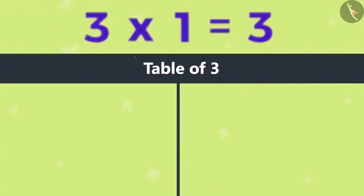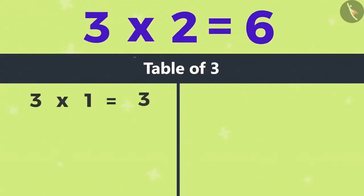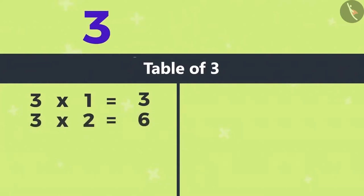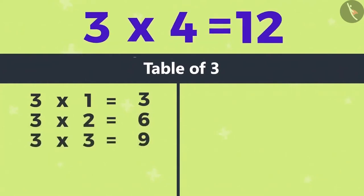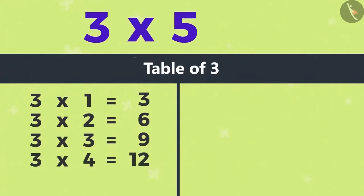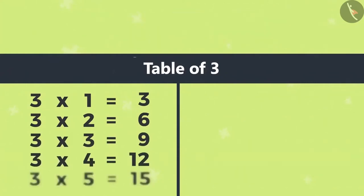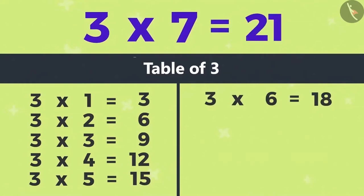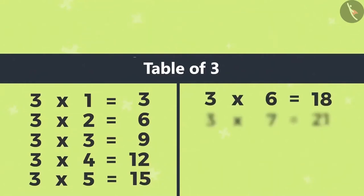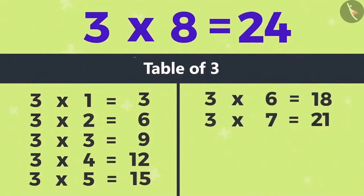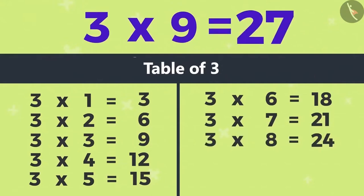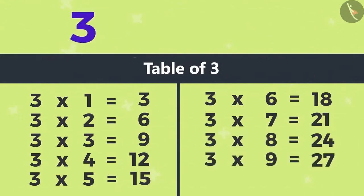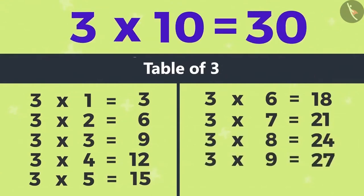Like this: 3×1 is 3, 3×2 is 6, 3×3 is 9, 3×4 is 12, 3×5 is 15, 3×6 is 18, 3×7 is 21, 3×8 is 24, 3×9 is 27, 3×10 is 30.